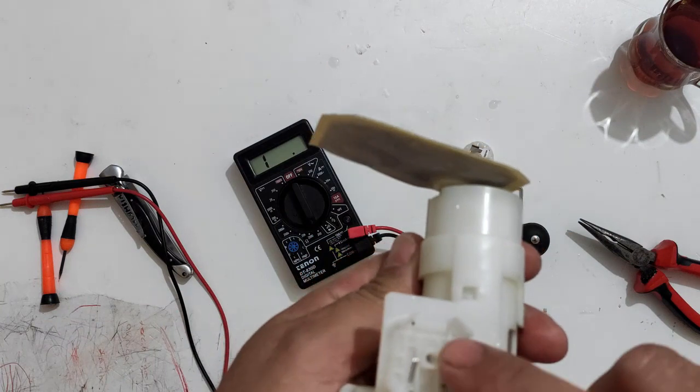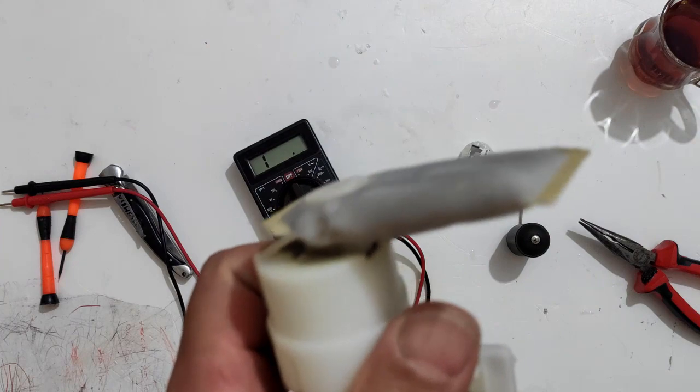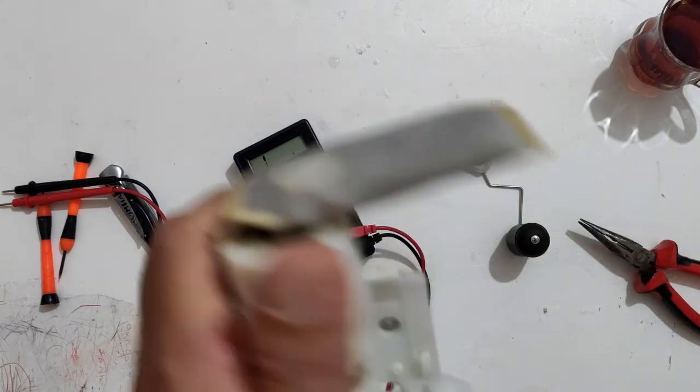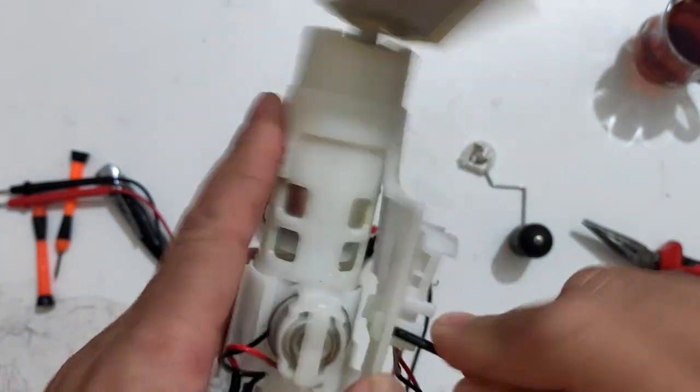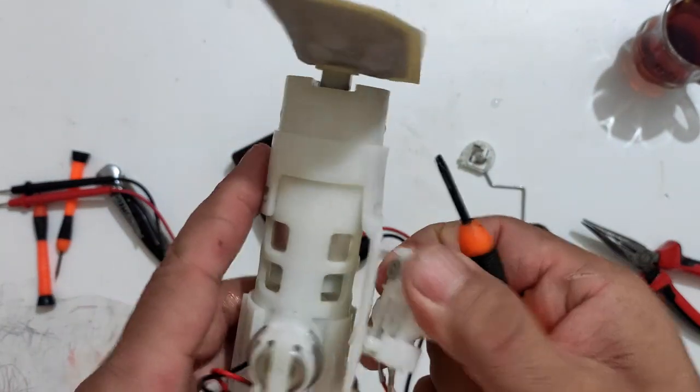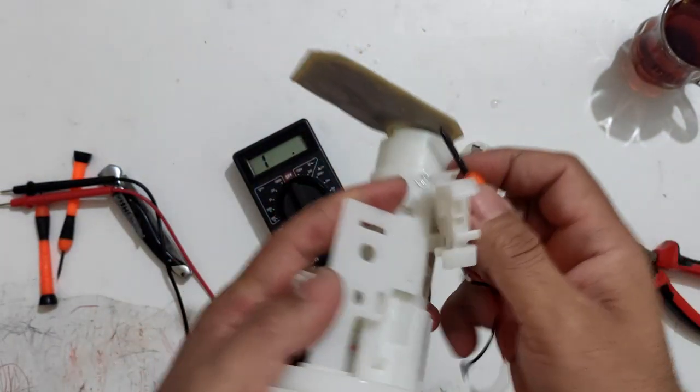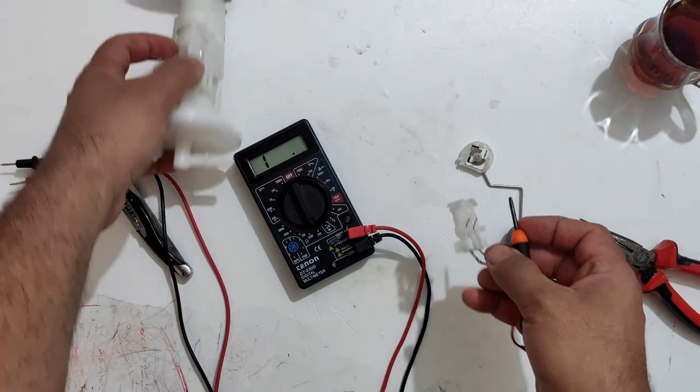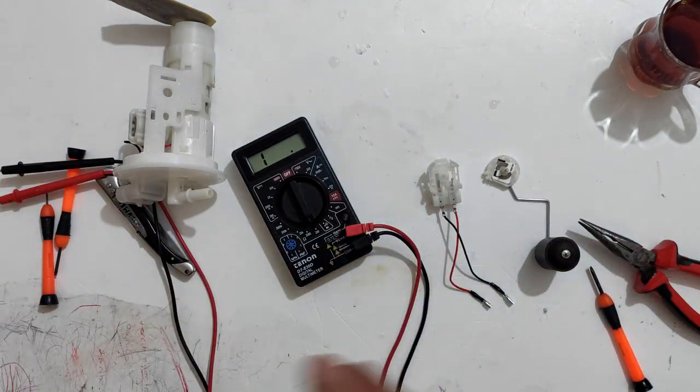Şimdi bunu şuradaki tırnaklardan alalım. Bunu aldık. Bu biraz kurusun. Ondan sonra bir daha direnç değerini ölçelim. Bakalım ölçebilirsek.